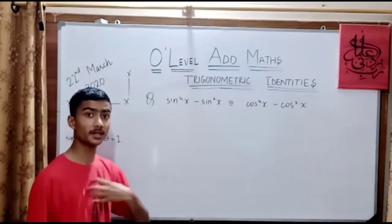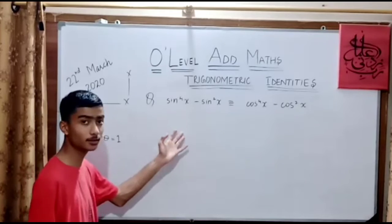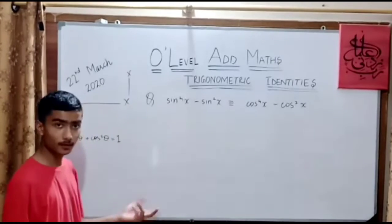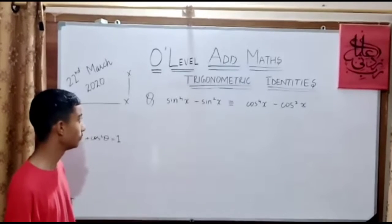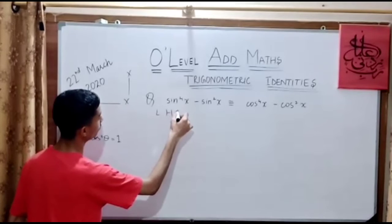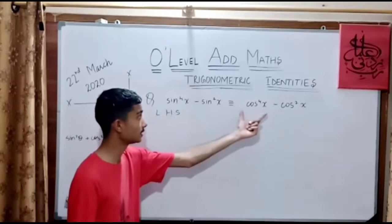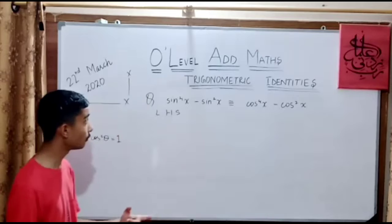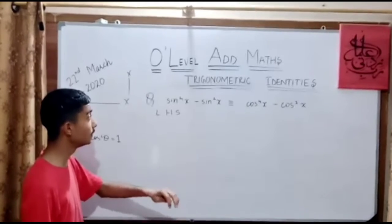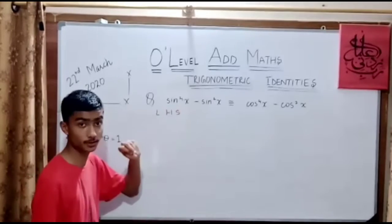Now we have to choose either the left hand side or the right hand side to work with. I will take the left hand side. So taking the left hand side, we have to prove that this is equal to the right hand side. For this we just have to know the identities which can be used to solve this question.